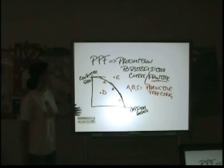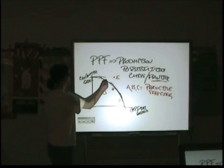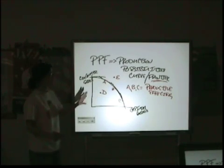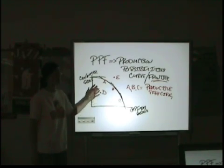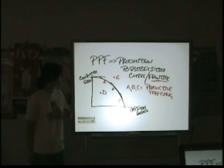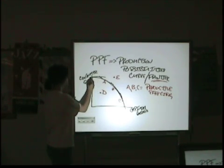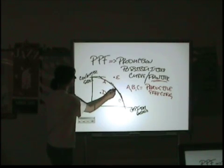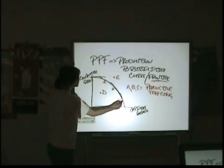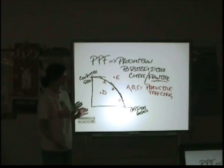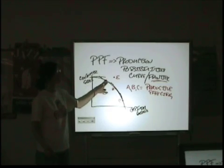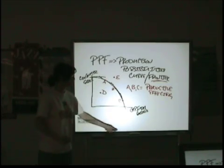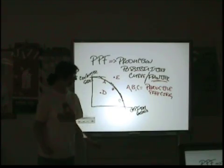In terms of deciding among the points on the curve, because if they're all productively efficient, then how do we make a decision as a society if we want to be closer to the consumer goods axis, or more or less in the middle? Or do we want to be closer to the capital goods axis? The difference in the choices among these points is a question of allocative efficiency.